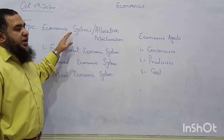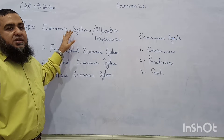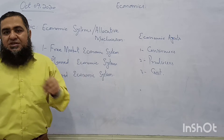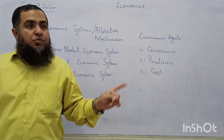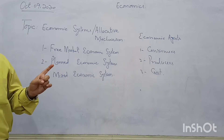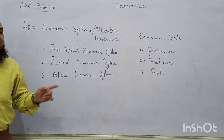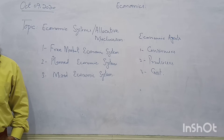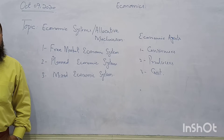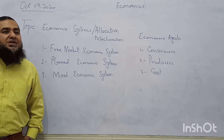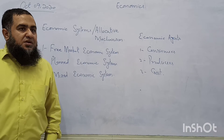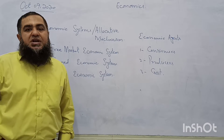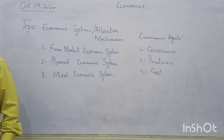Allocative mechanism or economic system means these economic systems will answer the basic economic questions — what, how, and for whom to produce — in order to overcome the basic economic problem of scarcity. That problem cannot be completely overcome, but we have to fulfil the maximum of human wants within given limited resources, which are also having alternate uses.